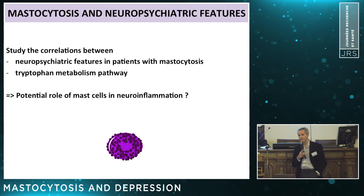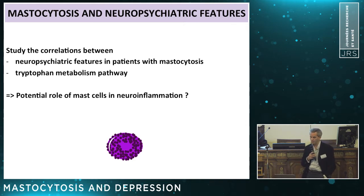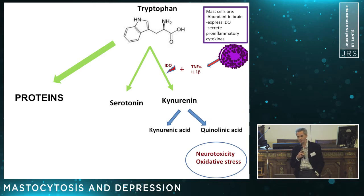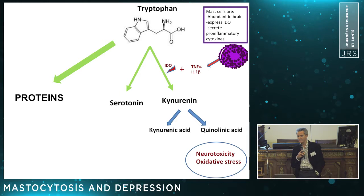We wanted to study the potential correlations between these features in patients with indolent forms of mastocytosis and the tryptophan metabolism pathway, in order to demonstrate a potential role of mast cells in neuroinflammation. Tryptophan is mainly used for protein synthesis, but also for serotonin and kynurenine. Kynurenine can be transformed either into kynurenic acid or quinolinic acid, with neurotoxicity or oxidative stress due to quinolinic acid. Pro-inflammatory cytokines can induce IDO, leading to activation of the kynurenine pathway and accumulation of quinolinic acid.